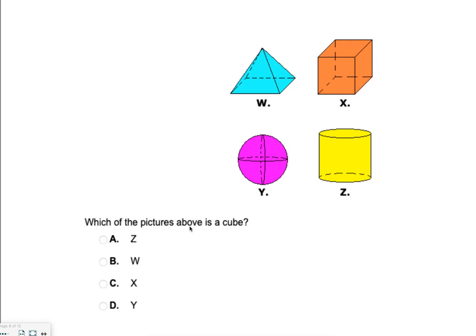In this question, we want to know which of the pictures or figures or shapes above is a cube. So if I look at these shapes, we should know what they're called. This is a pyramid. This is a sphere. This is a cylinder. And this is a cube. Hopefully, you paid attention to the fact that there's an X underneath the cube. And you chose C, letter X.